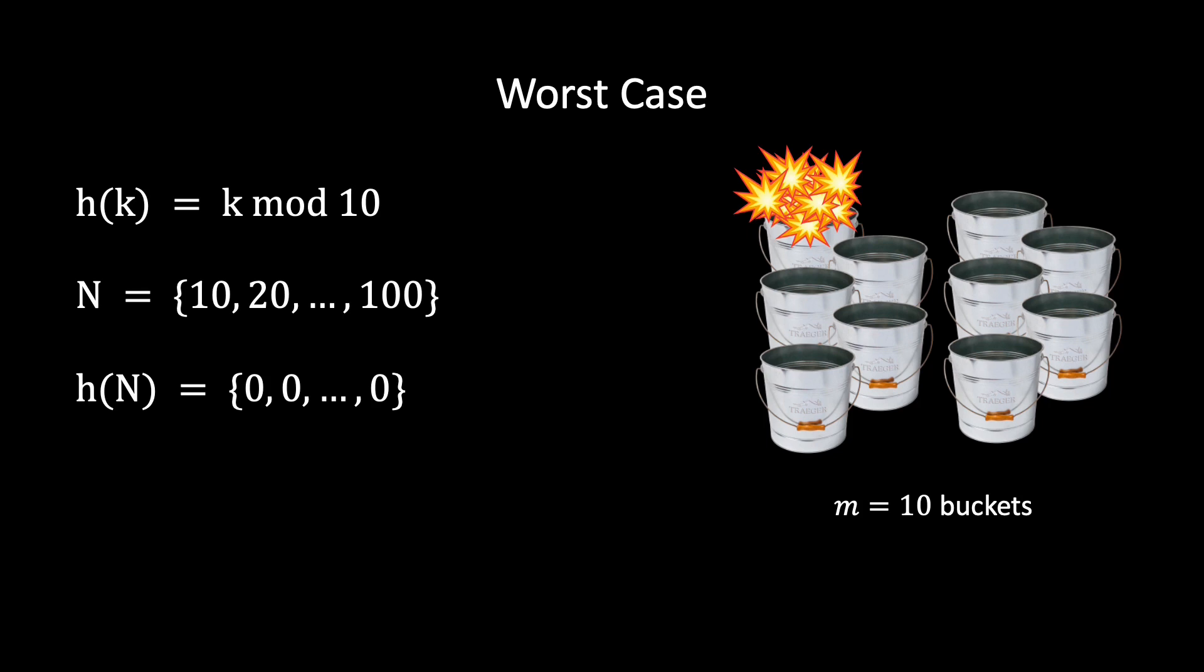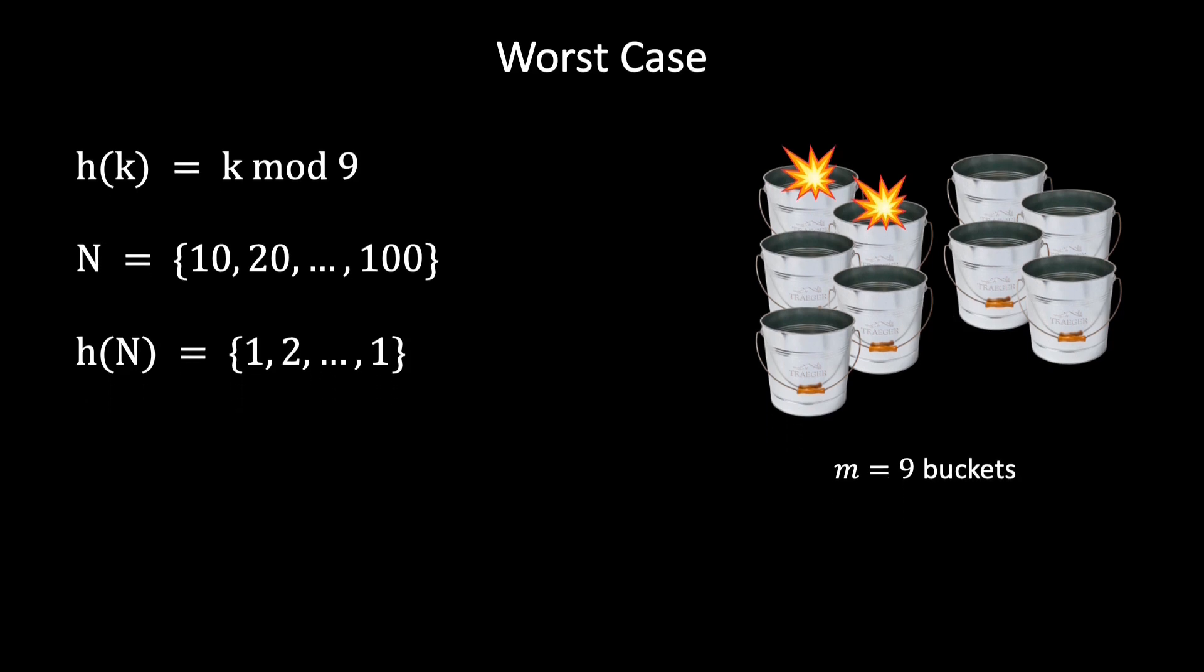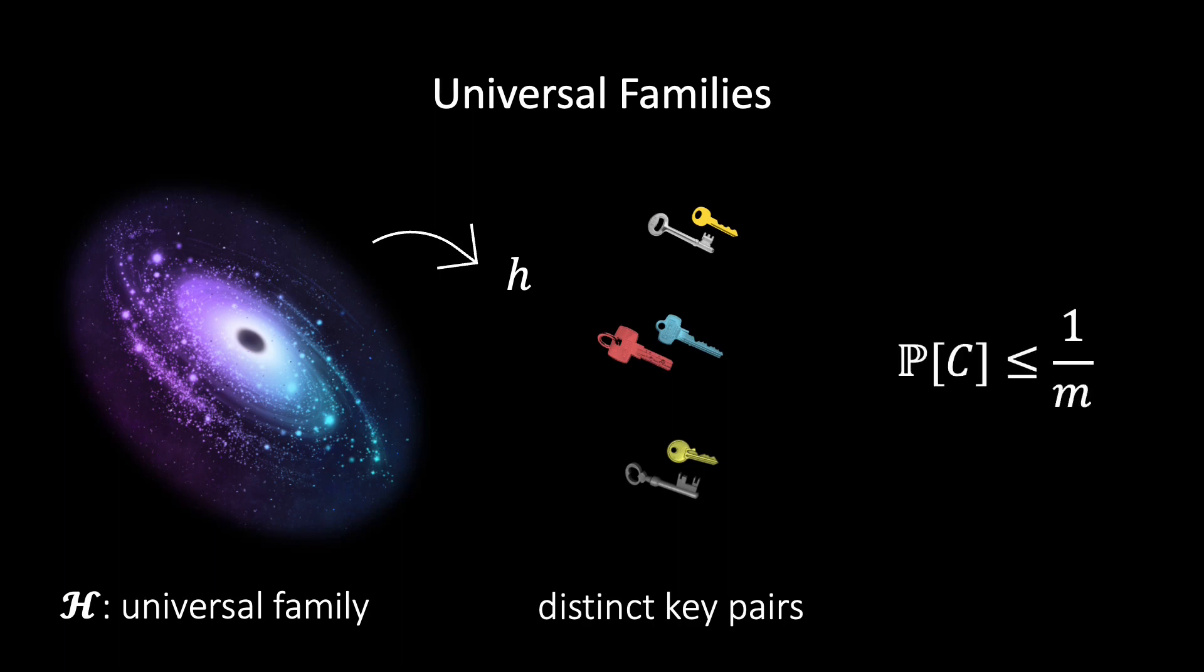But the inverse is also true. For any keyset we can find a very good hash function. How do we do that? In this concrete example we could simply use modulo 9 instead of modulo 10, and we would instantly get fewer collisions. Even better, there exists the concept of universal hash families. If we take a random hash function from a universal hash family, we are guaranteed that the probability of a collision on any two keys from a keyset is only one over the size of the hash table, which is optimal. This notion is widely used to build efficient hashing algorithms.